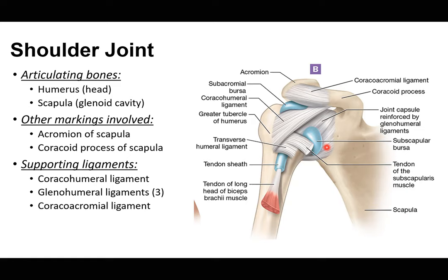The coracoacromial ligament is quite different from the glenohumeral ligaments — it runs from the coracoid process anteriorly to the acromion posteriorly, forming a superior arch above the humerus. This helps prevent superior dislocation of the humerus. That completes the overview of the shoulder joint.